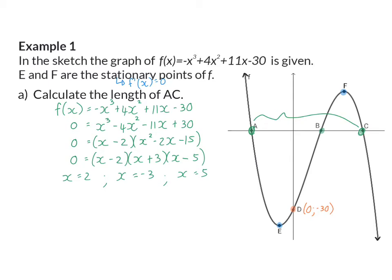This can be added to our sketch: A will be at (-3, 0), B at (2, 0), and C at (5, 0). Now it's easy to determine the length of AC — AC is a length of 8 units, because it's from -3 to 5.